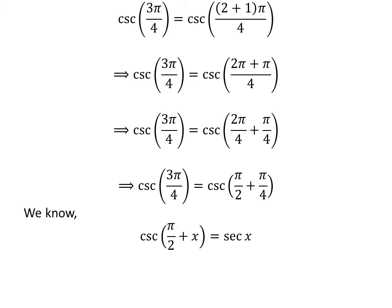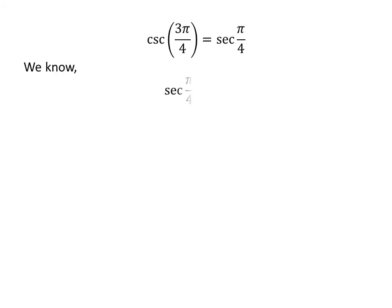We know the famous trigonometry identity: cosecant of half of pi plus x is equal to secant of x. The proof of the identity has been explained in the video appearing in the upper right corner, and the link is also given in the description. Applying this identity gives us cosecant of 3 times pi upon 4 is equal to secant of pi upon 4. We know secant of pi upon 4 is equal to square root of 2, so cosecant of 3 times pi upon 4 is equal to square root of 2.